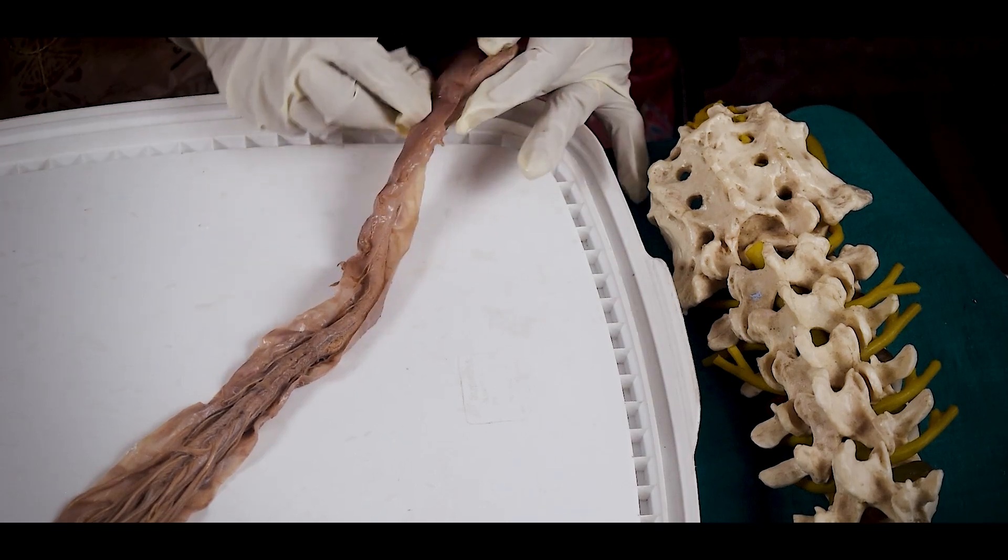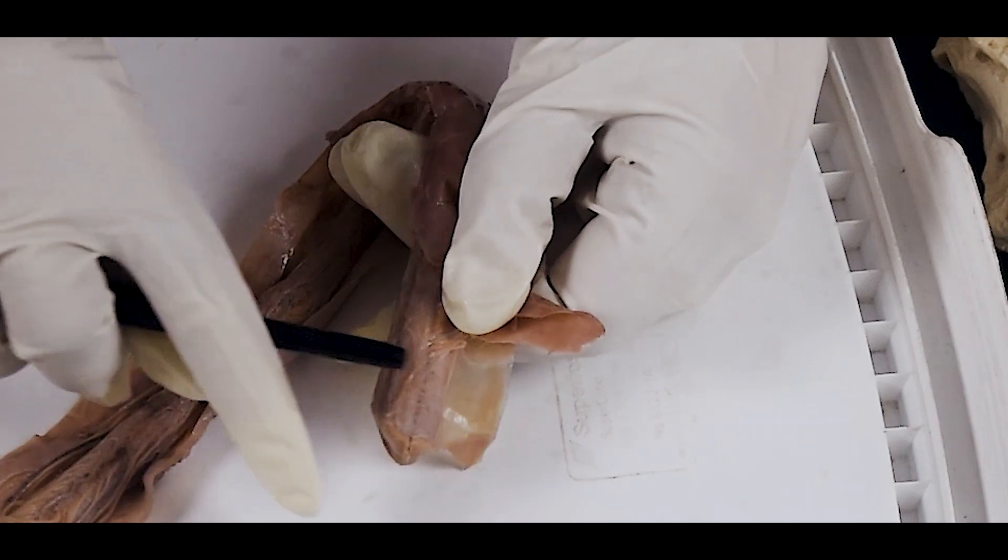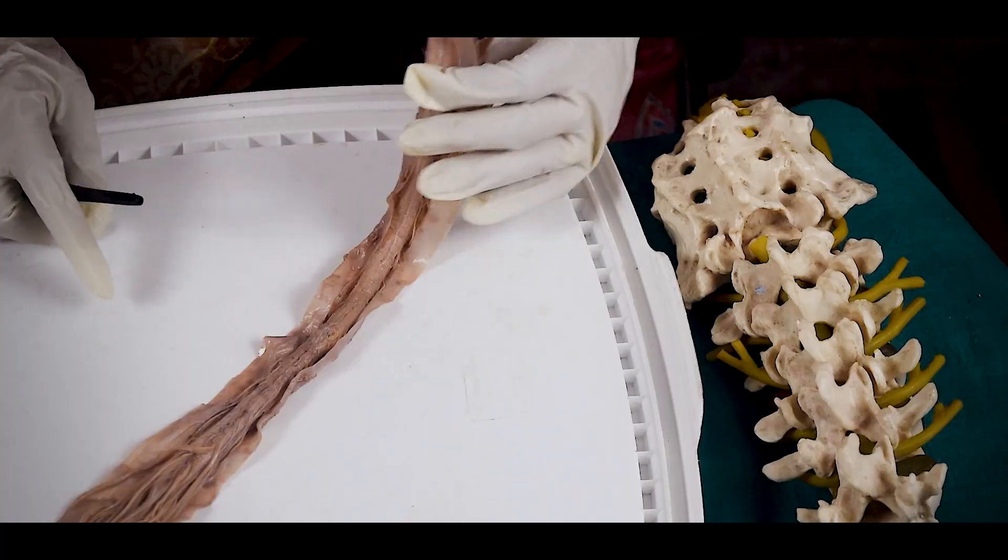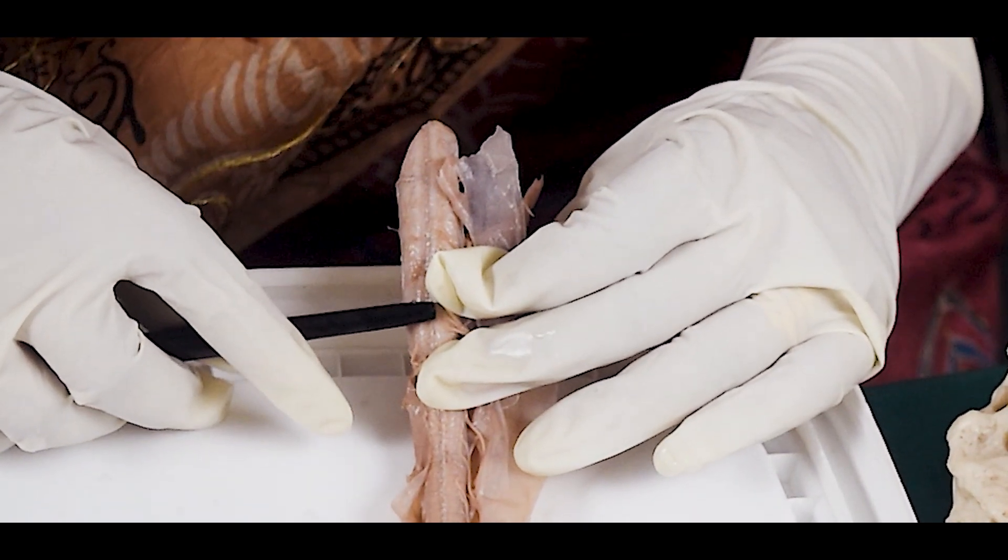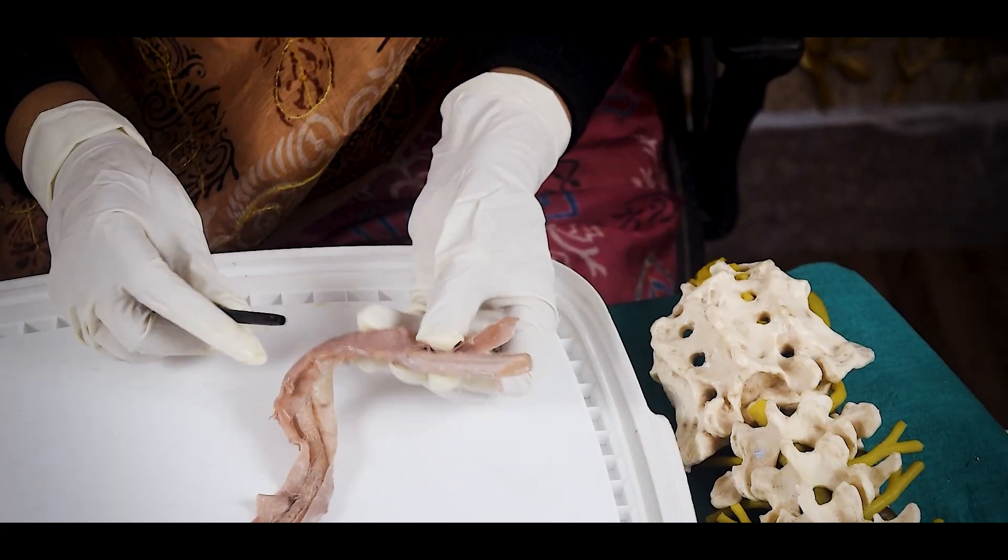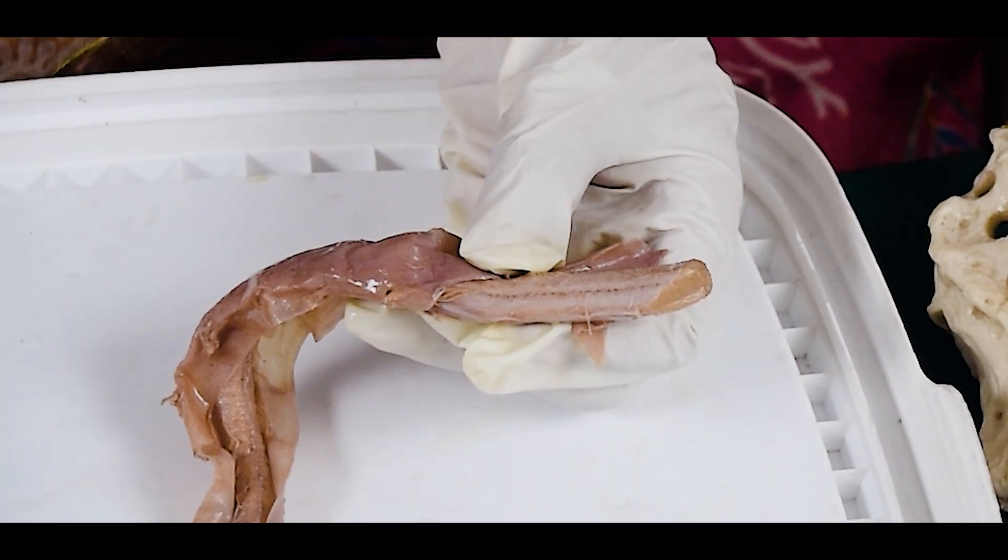And in the posterior surface you will see that there are two sulci, the posterior median sulcus. Along the anterior median sulcus lies the anterior spinal artery. Here lies the posterior spinal artery, one pair.